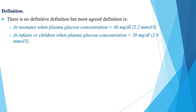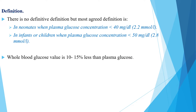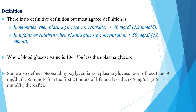Regarding definition of hypoglycemia, there is no definitive definition, but the most agreed definition is: in neonates, when plasma glucose concentration is less than 40 mg/dL, and in infants or children, when plasma glucose concentration is less than 50 mg/dL. Some also define neonatal hypoglycemia as a plasma glucose level of less than 30 mg/dL in the first 24 hours of life and less than 45 mg/dL thereafter.